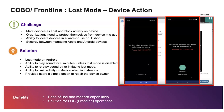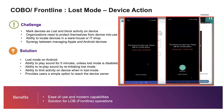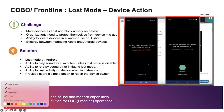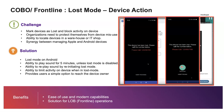Once you enable lost mode, you'll see a screen like this. If the device is capable of making calls, the person holding it can simply click a button to dial the specific number you listed in your lost command. This helps with easy retrieval and makes it easier for someone to return the device. If the device is locked, there will be an additional icon to unlock it. This helps prevent misuse.